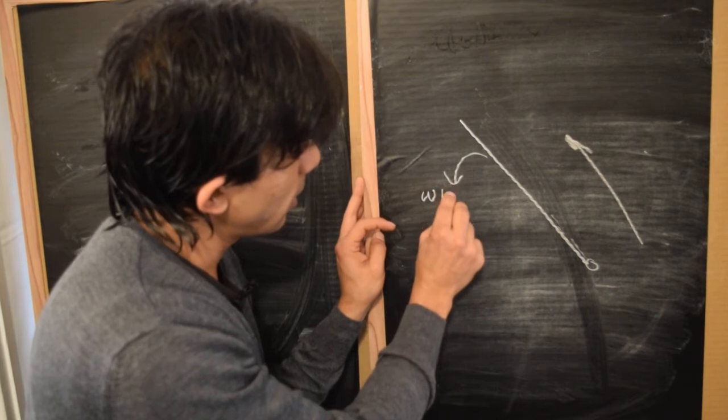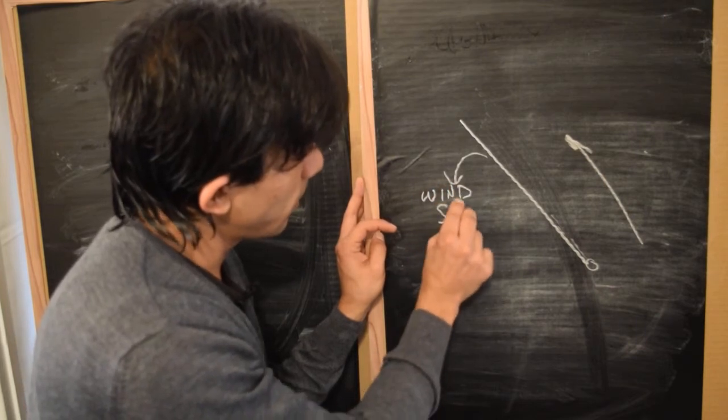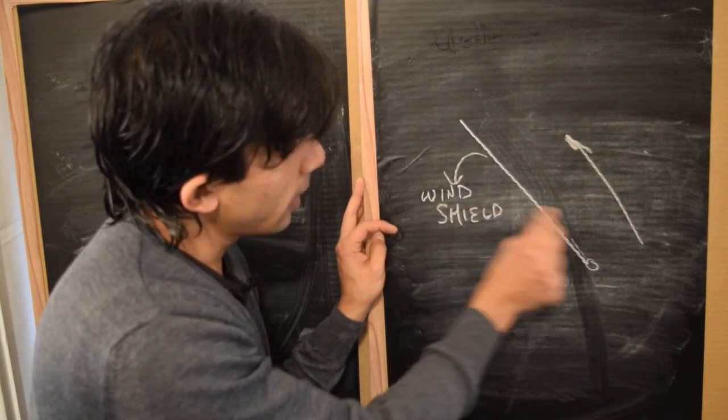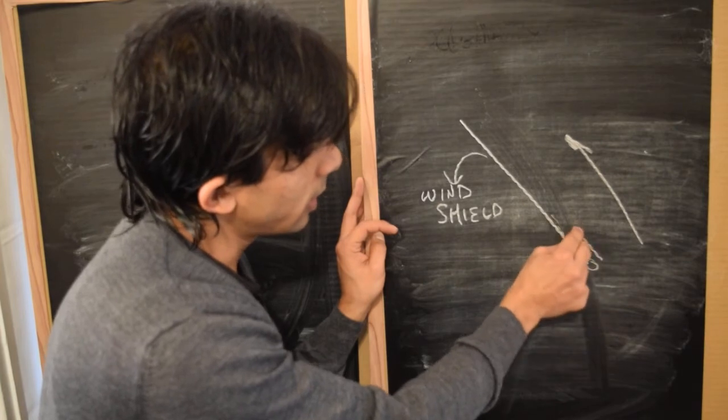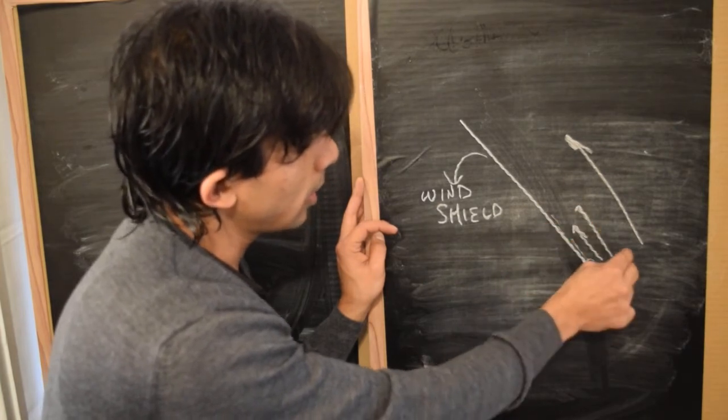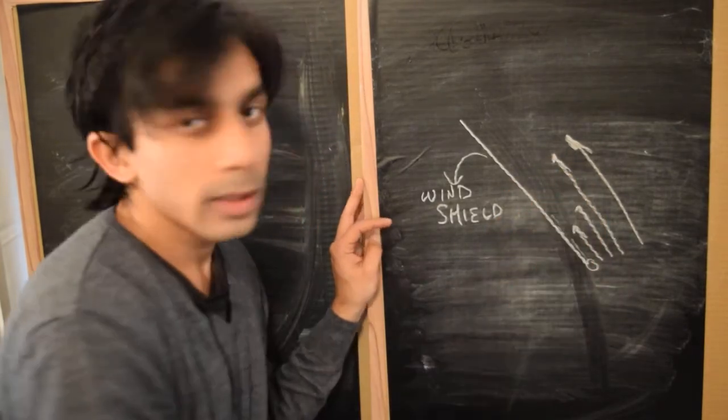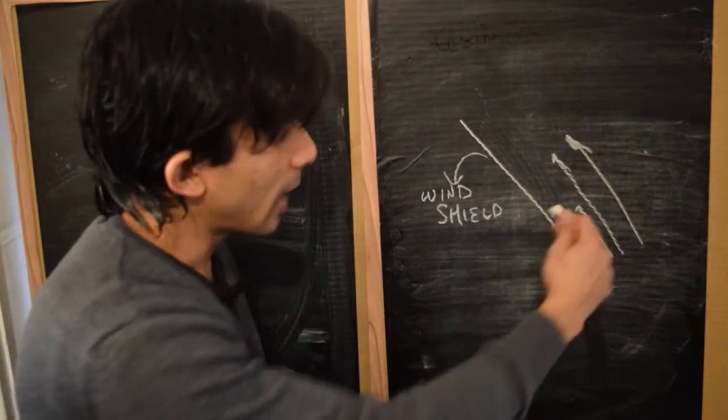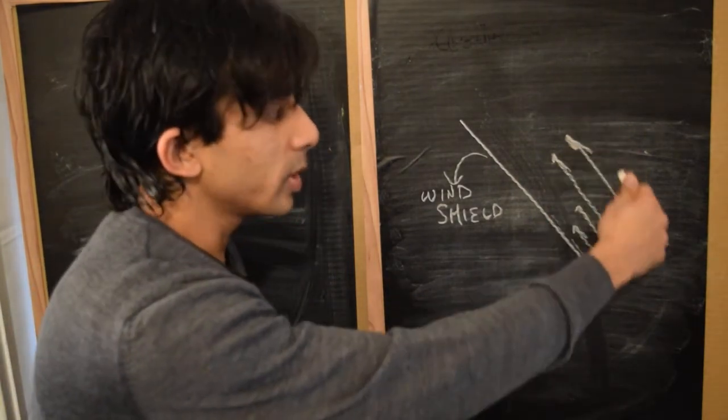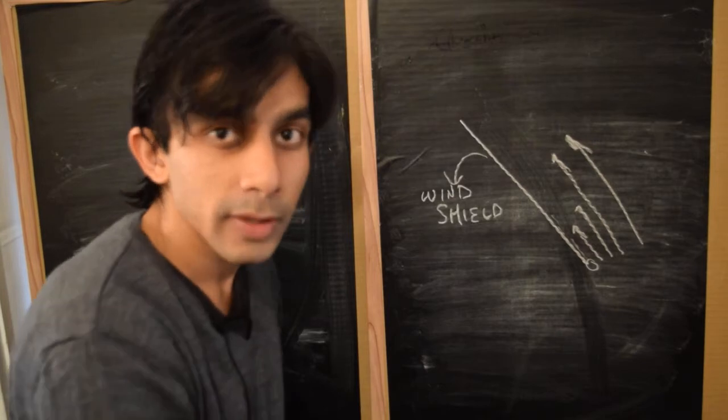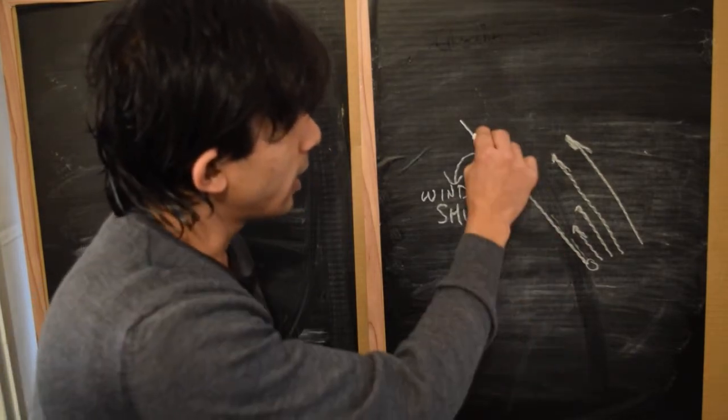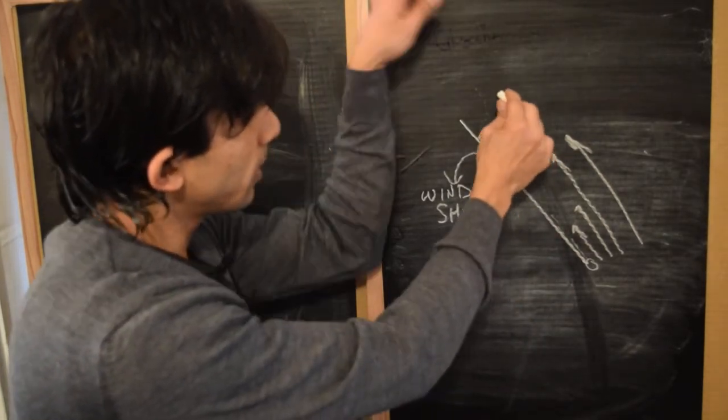So this is your windshield, and then over a very thin layer the speed at which the air is moving rapidly changes to the speed at which it's blowing at a significant distance away from the windshield. And this thin layer around the windshield is called the boundary layer.